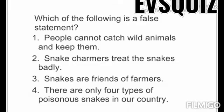The next question is: 'Which of the following is a FALSE statement?' Option one: people cannot catch wild animals and keep them. Option two: snake charmers treat the snakes badly. Option three: snakes are friends of farmers. Option four: there are only four types of poisonous snakes in our country. Remember, they are asking which is a FALSE statement. Read the question and all options very carefully, then give your answer. Start thinking students.